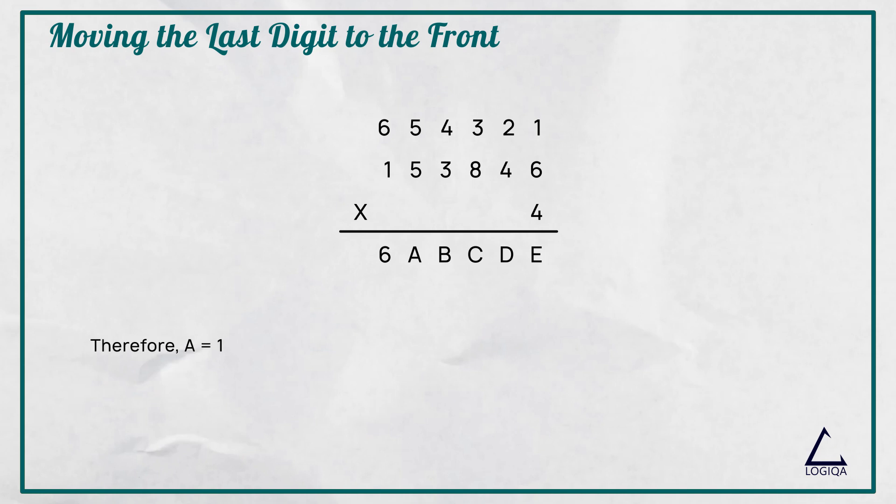So, to recap, A is equal to 1, B is equal to 5, C is equal to 3, D is equal to 8, E is equal to 4. We can input these values back into the cryptograph to get 153846 into 4 is equal to 615384.